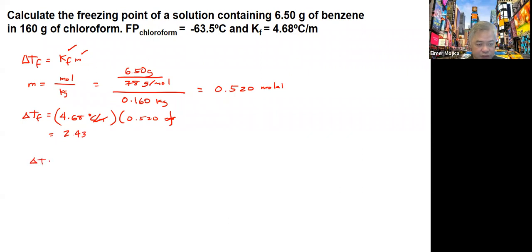So we know delta TF is also equal to the freezing point of the solvent minus the freezing point of the solution. If we're going to look at this one, the delta TF is 2.43, and we have here negative 63.5, so we are trying to get this one.